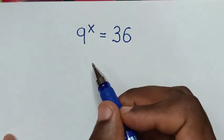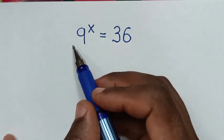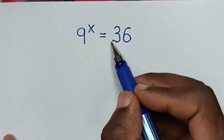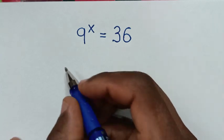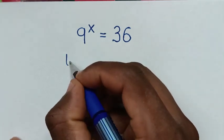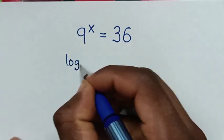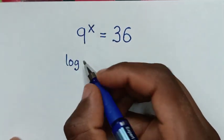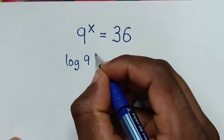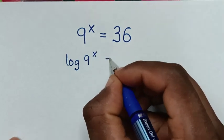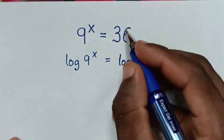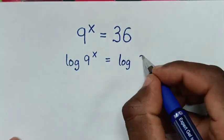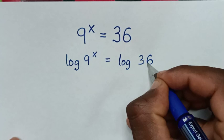Now, in the first step, we'll apply log in both sides. So we'll apply log here — it will be log of 9 power x is equal to log of 36.